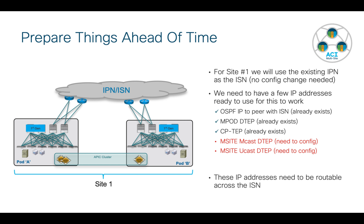Technically we can reuse some existing TEP addresses for our multi-site multicast TEP and unicast TEP, but it's generally recommended to give them different IPs - just to keep mental awareness and differentiation when it comes time to troubleshoot. All of these addresses need to be fully routable across the IPN slash ISN.